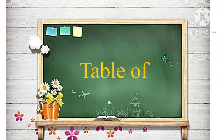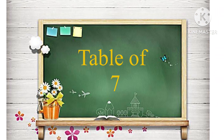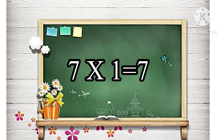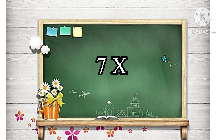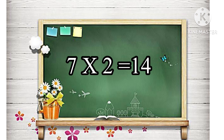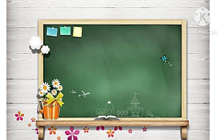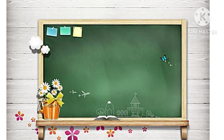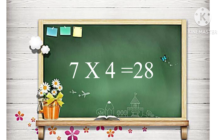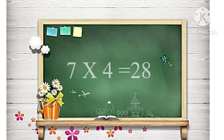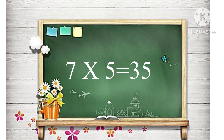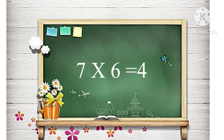Table of 7. 7 ones are 7. 7 twos are 14. 7 threes are 21. 7 fours are 28. 7 fives are 35. 7 sixes are 42.